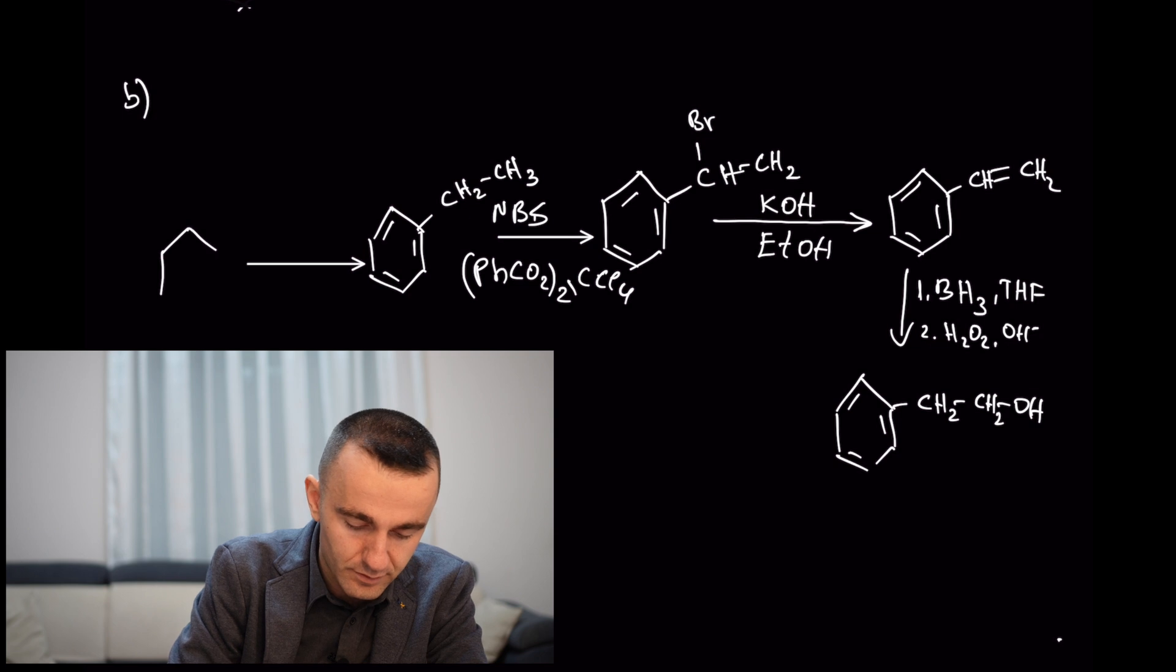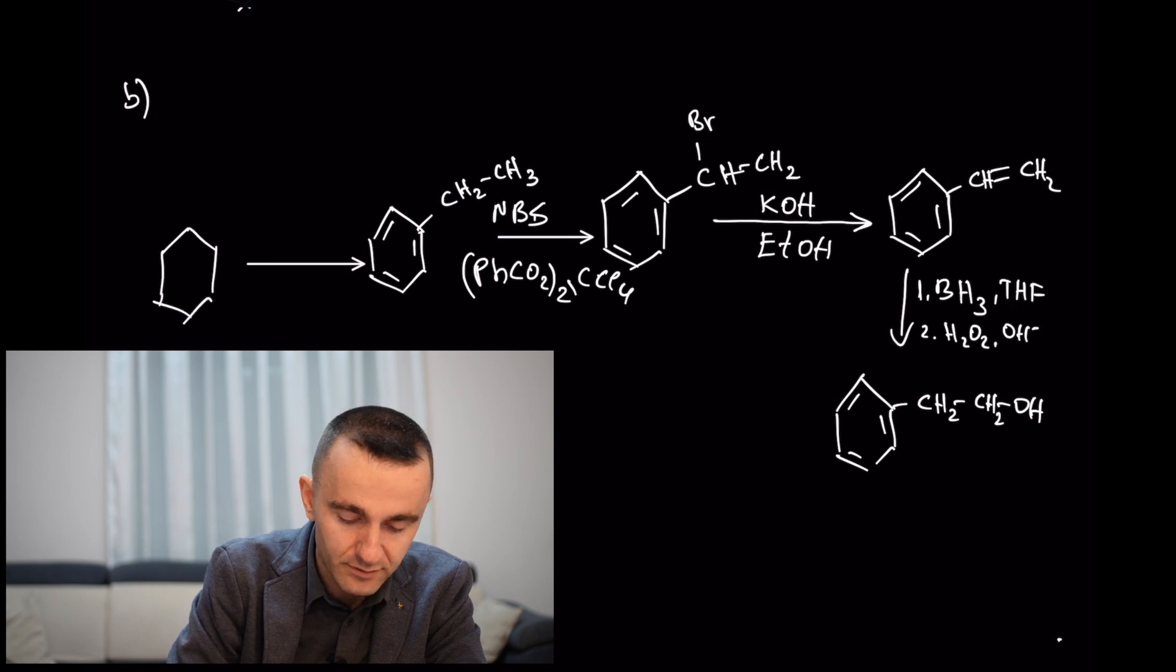Now, in order to add this ethyl, you're going to use Friedel-Crafts reaction: CH3CH2Cl with aluminum trichloride.